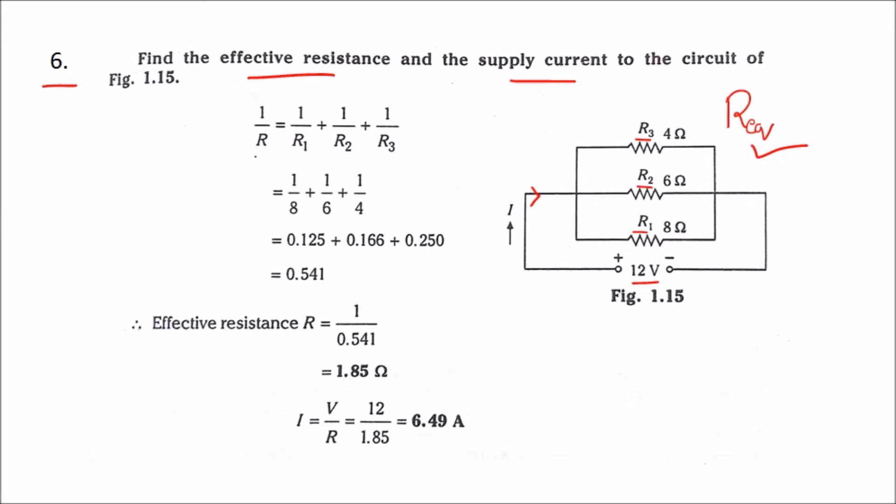As we know, the formula for equivalent resistance is 1 by R equals 1 by R1 plus 1 by R2 plus 1 by R3. As we have three parallel resistances, we are calculating for the three resistances.